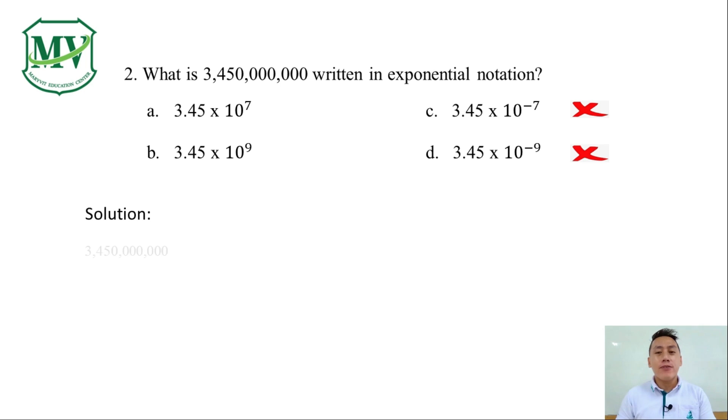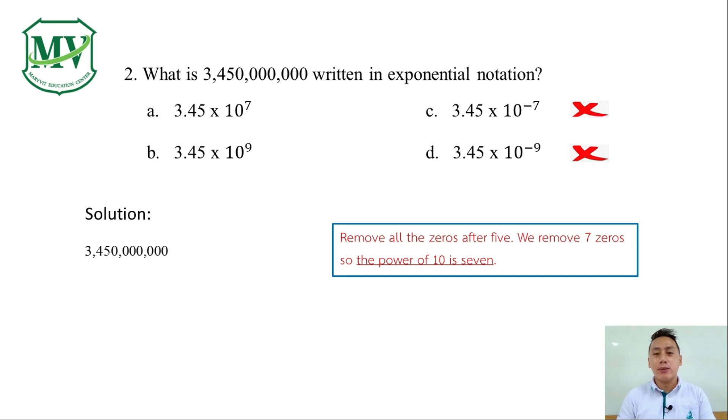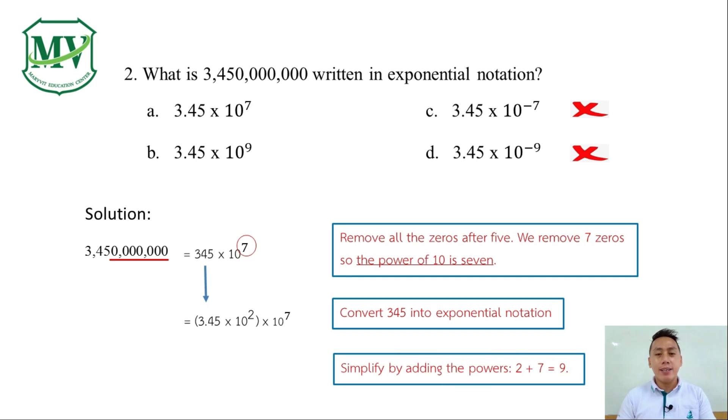First, remove all the zeros after the last digit that is greater than 0. That number is 5. We remove seven zeros so the power of 10 is 7. Next, convert 345 into exponential notation. And that's 3.45 x 10 raised to the power of 2. Lastly, simplify by adding the exponents. 2 plus 7 is equal to 9. Our final answer is 3.45 x 10 raised to the power of 9. And that is letter B.